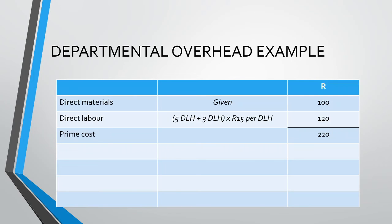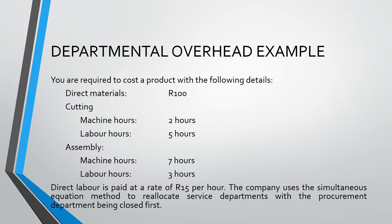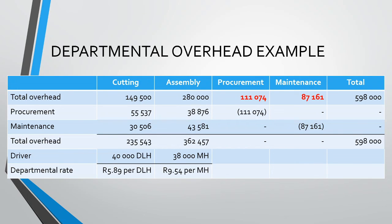Our direct materials and direct labor are fairly straightforward. We calculated the total prime cost of R220 in our previous videos, and this will not change between the reallocation methods, so we'll focus on the fixed overheads. When allocating the overheads to the products, we will start with the cutting department. The cutting department is labor intensive, so we ignore the machine hours and only consider the labor hours of five direct labor hours. The five direct labor hours in the cutting department need to be multiplied by the cutting departmental overhead rate of R5.89 per direct labor hour.